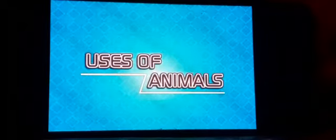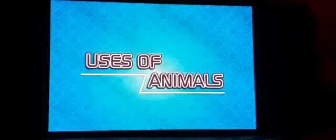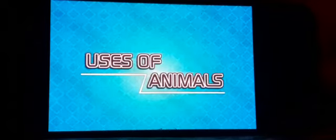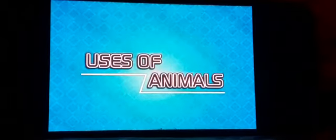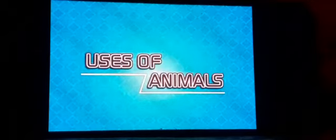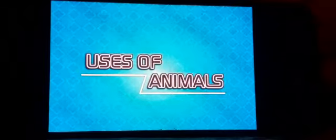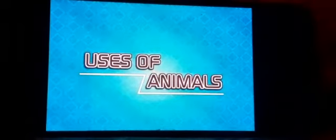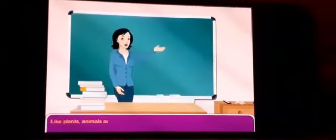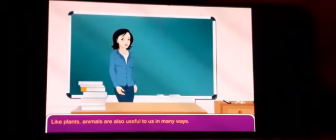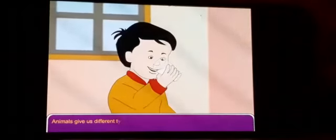Hello students, today I am going to teach you Science of Class 4. The 4th chapter in your book is 'Uses of Animals.' As we all know that plants are very useful for us, but like plants, animals are also useful for us in many ways. So in this chapter we will read about how different kinds of animals are useful for us in different ways.